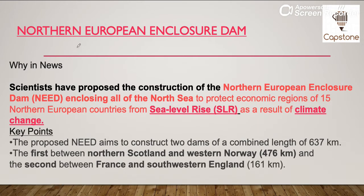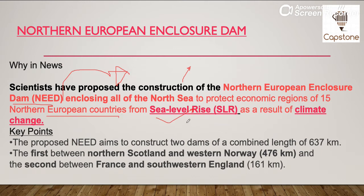Now, the third news is regarding Northern European Enclosure Dam. Jaisa ki hum sab ko pata hai, sea level rise hota ja raha hai because of climate change. Jaaise-jaise sea level rise hoga, jo bhi countries island countries hain, un countries mein agar ye sea level rise hota hai toh unke liye ek threat pose hoga. Isi ke liye, scientists ne Northern European Enclosure Dam ki need propose ki hai — isko construct karne ki baat ki gayi hai ki northern Europe mein yeh dam banaya jaye jo in countries mein sea level rise hone waala hai, usse bacha sake.